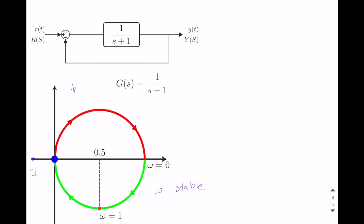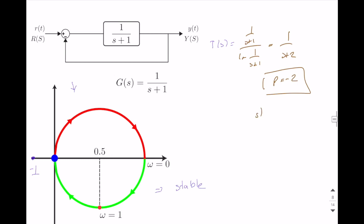So let's check the stability by computing the closed-loop transfer function, which is equal to one over S plus one divided by one plus one over S plus one. This is one over S plus one times one over S plus two. One over S plus two. Our pole is at minus two location on real axis. So this system is stable. And as you can see, we verify using simple checking the route.